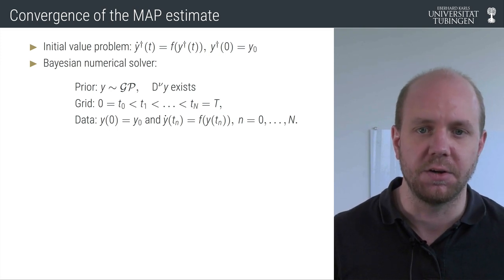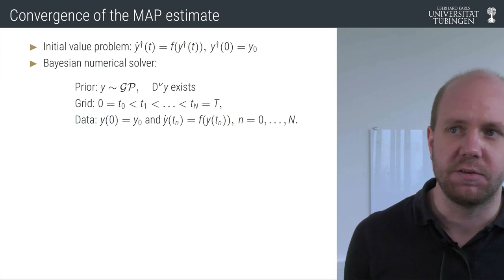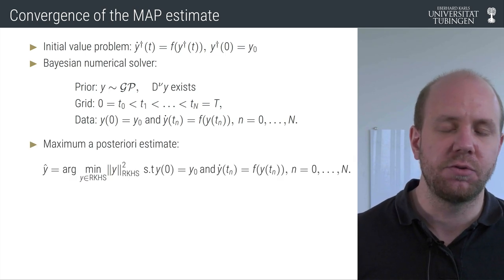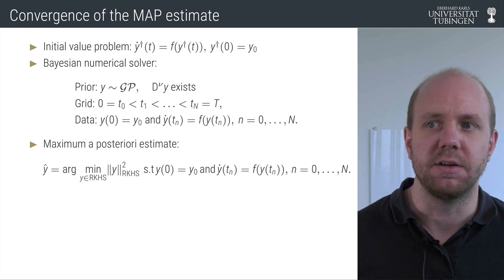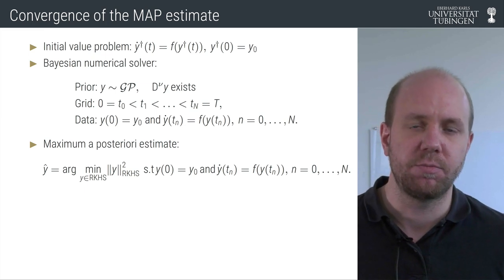This is a very hard object to deal with, and so the next best thing would be to look at the maximum a posteriori estimate, which is defined as the minimum norm interpolant in the reproducing kernel Hilbert space of the Gaussian process prior.